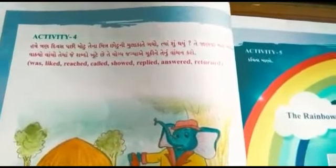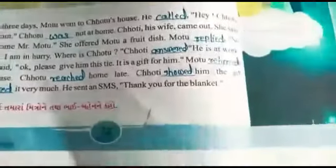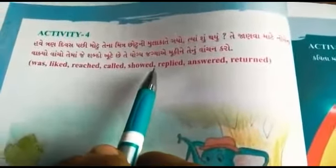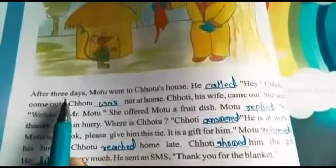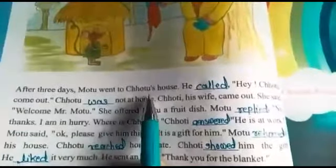This is the story of Activity 4. After 3 days — 3 divas pachy — Mojo went to Chotu's house. 3 divas pachy, Mojo Chotu na gharay gao.